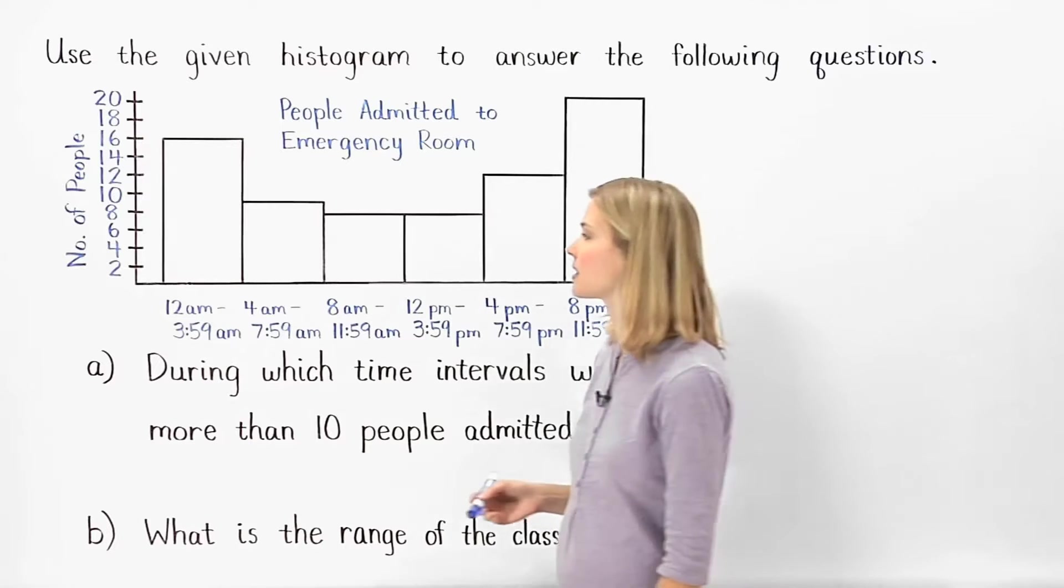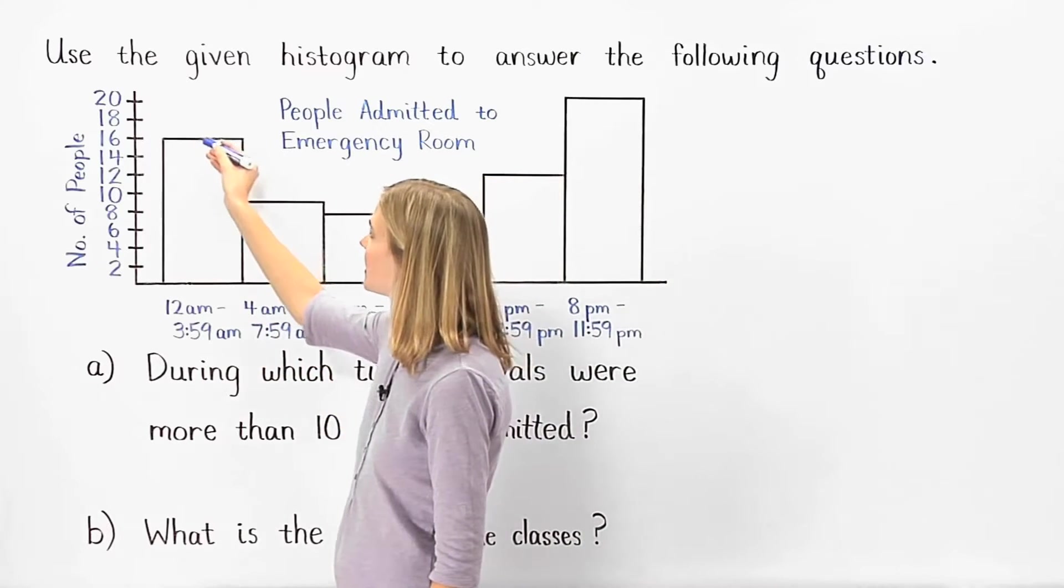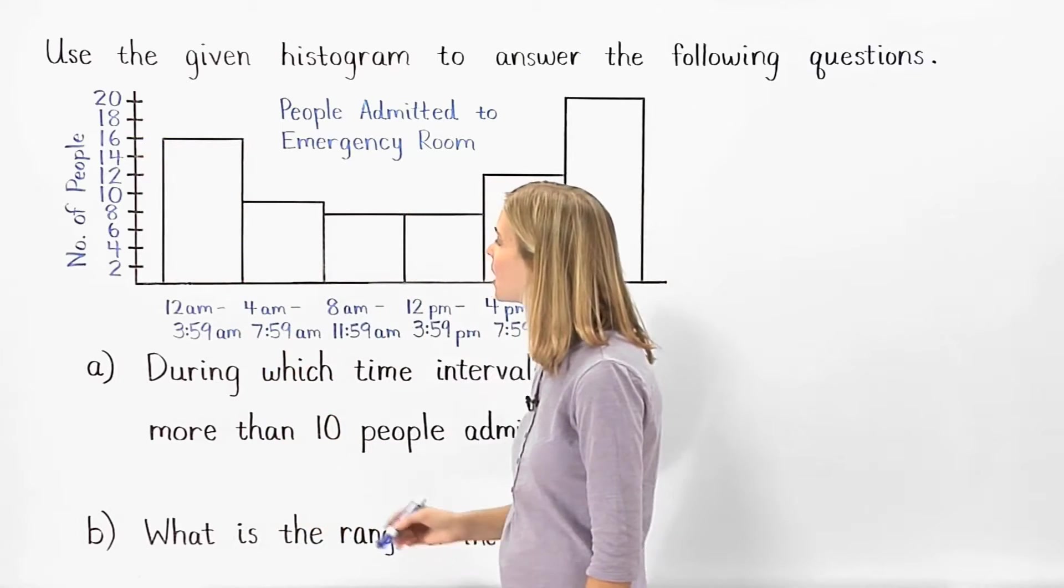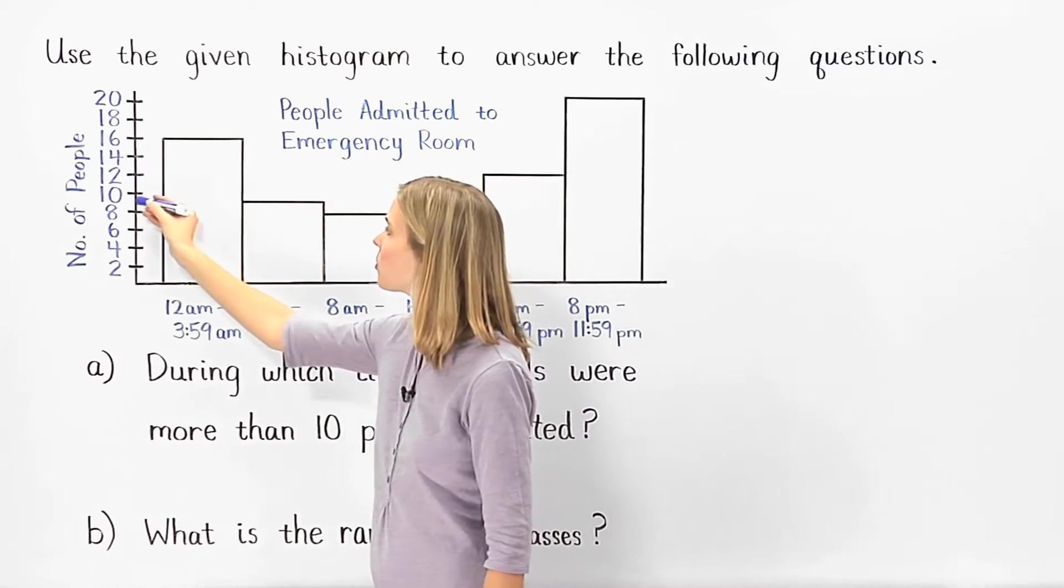The histogram tells us that between 12 a.m. and 3.59 a.m., 16 people were admitted to the emergency room. Between 4 a.m. and 7.59 a.m., 9 people were admitted.